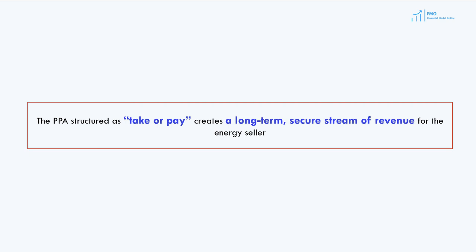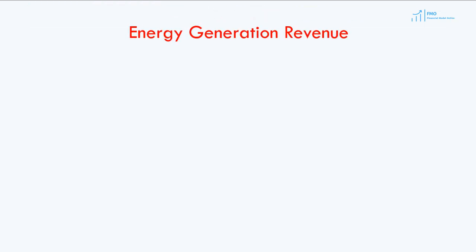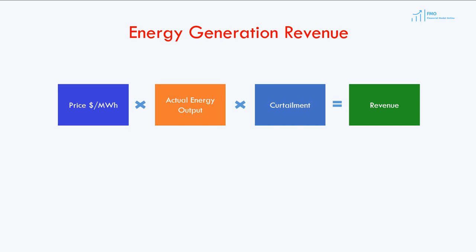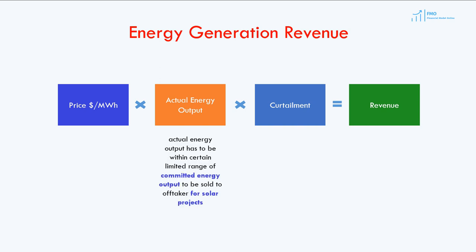The PPA structured as a take-or-pay contract creates a long-term, secure stream of revenue for the energy seller, as long as the seller is able to maintain guaranteed availability in the case of a wind project, or generate committed energy output in the case of a solar project. Energy sales are calculated using a simple formula: energy price times actual energy output times generation curtailment equals revenue. For solar projects, the actual energy output must be within a certain limited range of committed energy output.